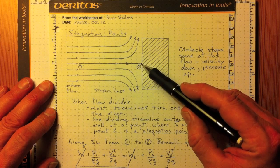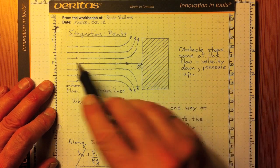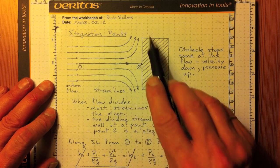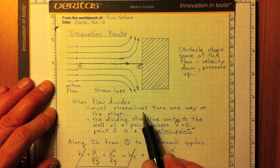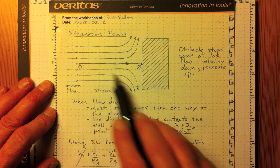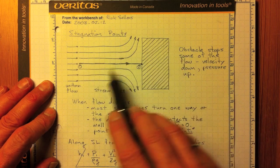This location here at 2 will be a stagnation point. The flow is coming towards this surface and has to divide and go either direction. Most of the streamlines will go off in one direction or another.